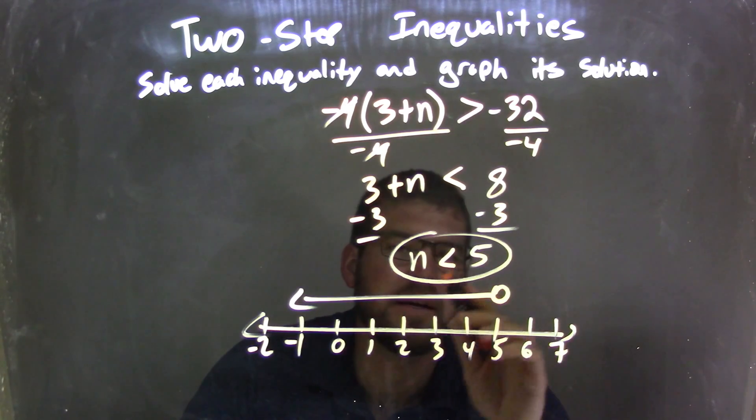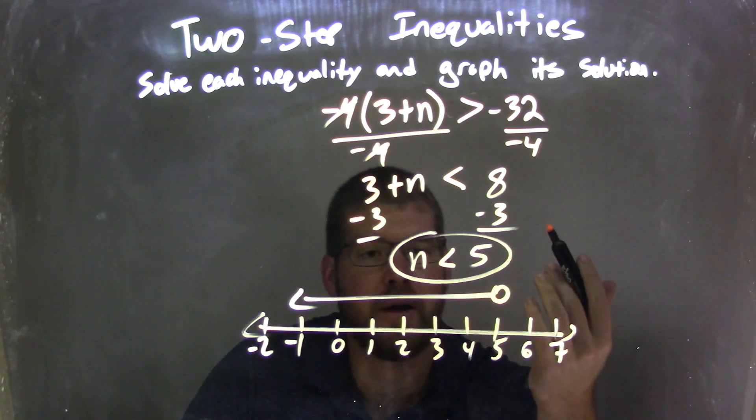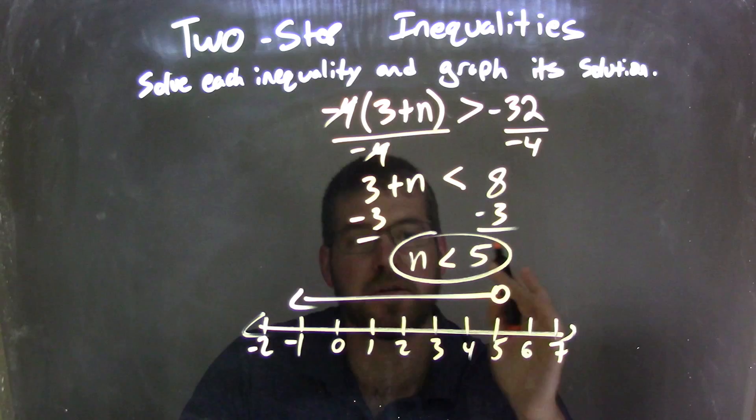But if I put a 6 in there, 6 is not less than 5, incorrect. It's not part of our graph. So our graph matches our final answer of n is less than 5.